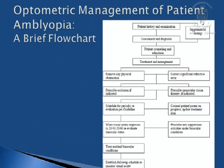This chart shows how to manage a patient with amblyopia. The first step is removal of any physical obstruction, then correction of refractive error, followed by occlusion therapy.